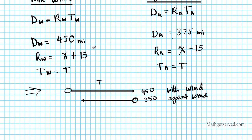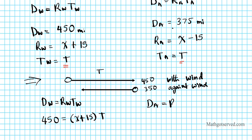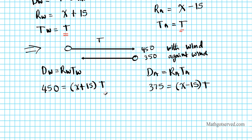Now let's go ahead and solve. We plug the known values into our equations and use the linking variable — time t — to connect the two equations. For the with-wind case: 450 equals (x + 15) times t. For the against-wind case: 375 equals (x − 15) times t. I can then set these proportions equal to each other to solve.